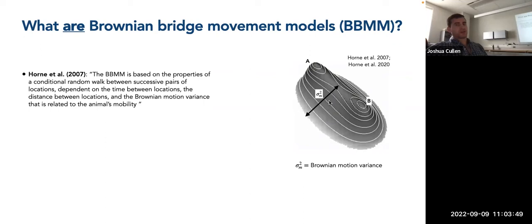For a Brownian Bridge Movement Model, there's considered to be a single value for this Brownian motion variance. As you'll recognize, the term Brownian is similarly what we used when referring to the continuous time random walk for behavioral state estimation. Brownian models are essentially continuous time random walks — there's no correlation or directional persistence involved. It's just a diffusive process through space.